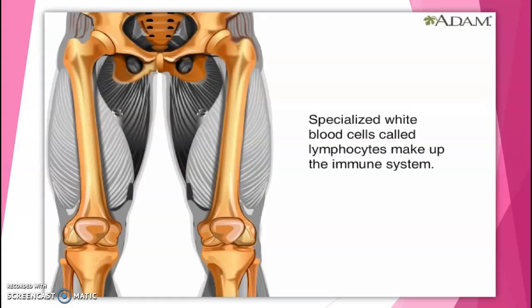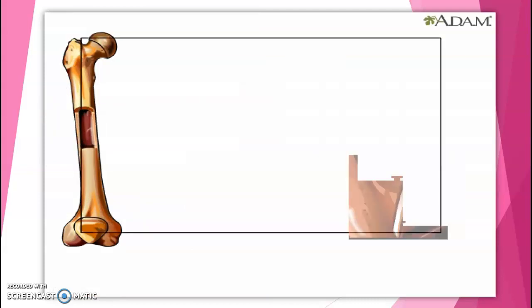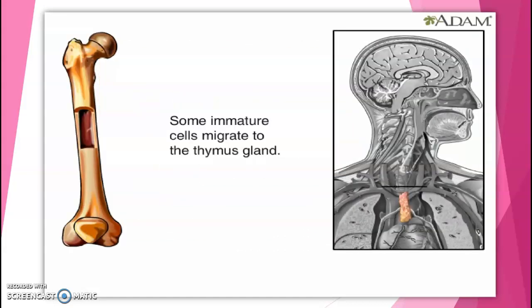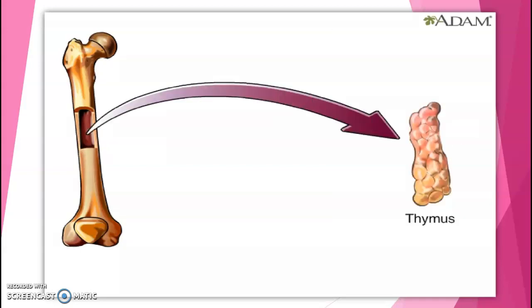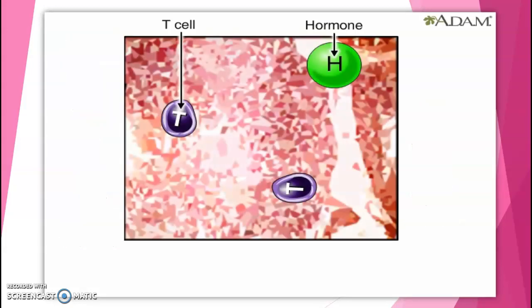Special white blood cells called lymphocytes play a key role in the immune system's response to foreign invaders. There are two main groups, both part of the immune system. Influenced by hormones, they mature into several types of effector cells.